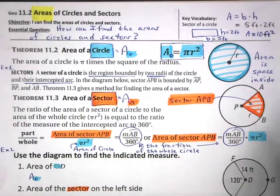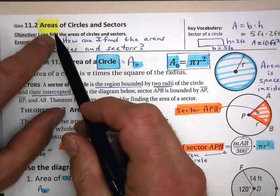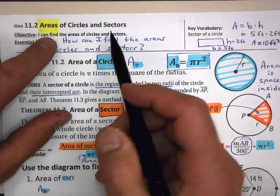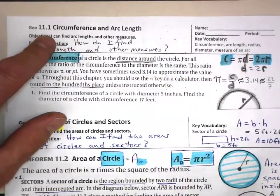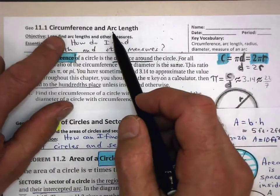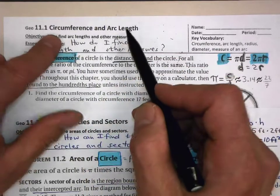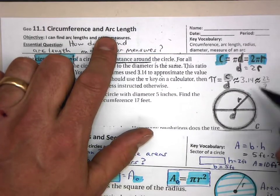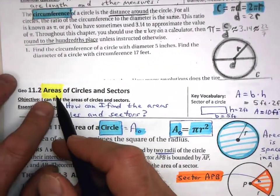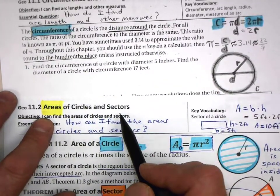Welcome to 11.2, and we are looking at areas of circles and sectors. You will remember that we just did 11.1, which was circumference and arc length — the distance around a circle and the distance of just a portion of that circle. And now we are looking at areas of the entire circle and areas of a portion of that circle.